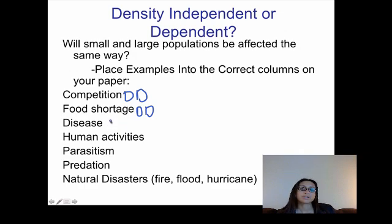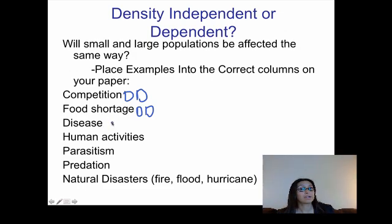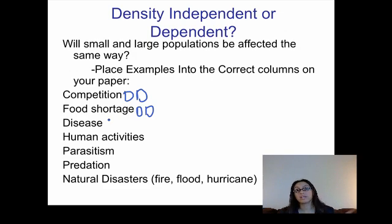Disease: depending on the type of disease, size does matter. In a small population that is close together, disease can spread very quickly. If it's a large population spread out, it might spread very slowly. So disease is a density dependent factor.